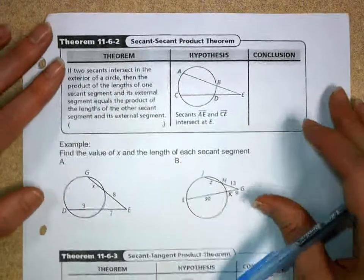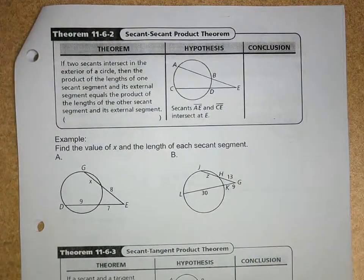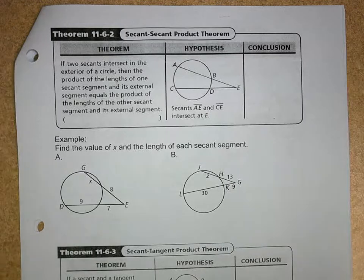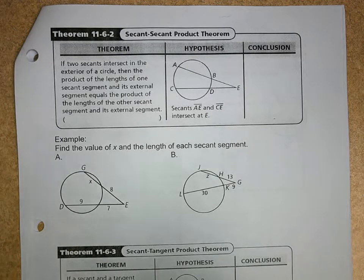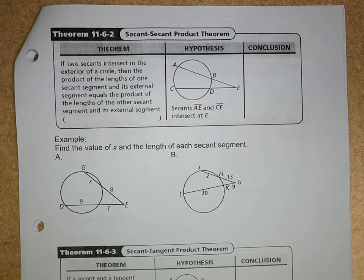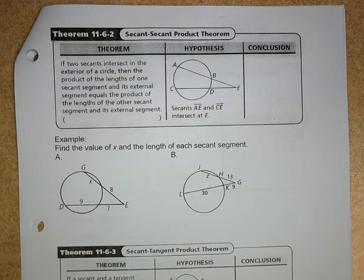Okay, so on this one we have what's called the secant-secant product theorem. So again, we have multiplication going to happen. And this is what it says. If two secants intersect in the exterior of a circle, then the product of the lengths of one secant segment and its external segment equals the product of the lengths of the other secant segment and its external segment.